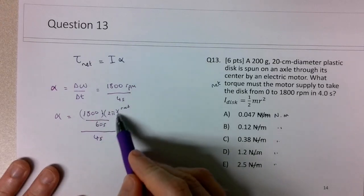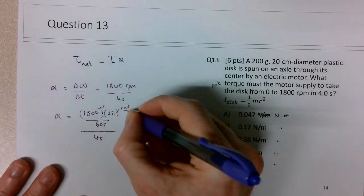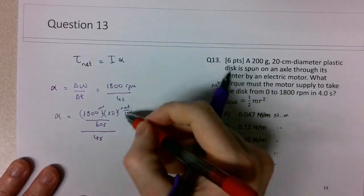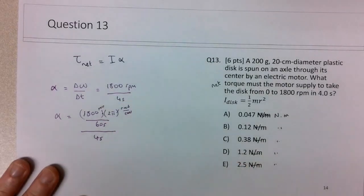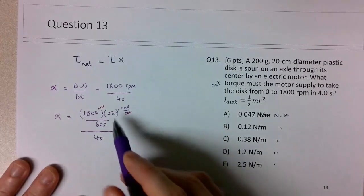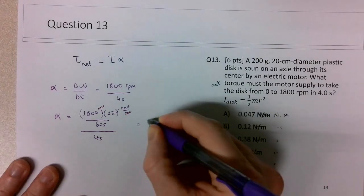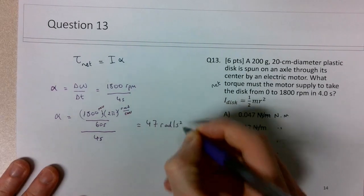So 1800 revolutions, there's 2 pi radians per revolution. If you want to do anything completely in correct units, those revs will end up canceling. And you'll end up with radians per second divided by seconds. And this should give you an acceleration of 47 radians per second squared.